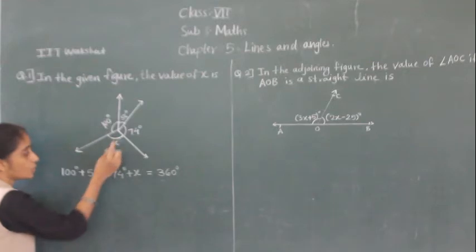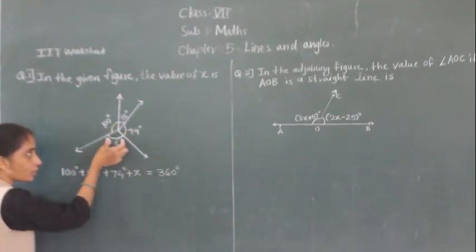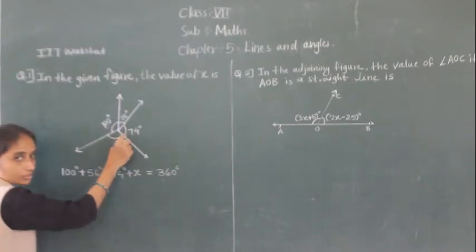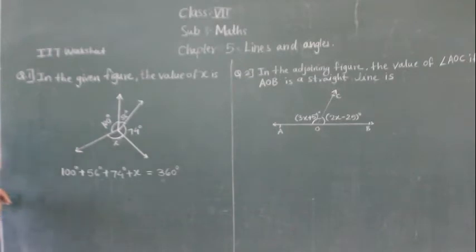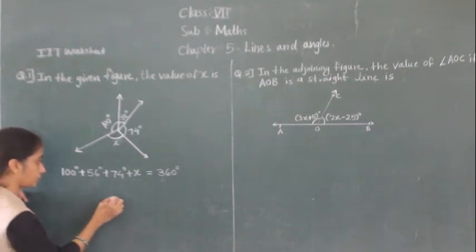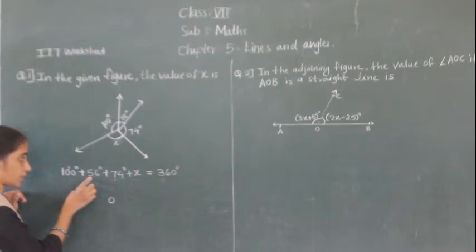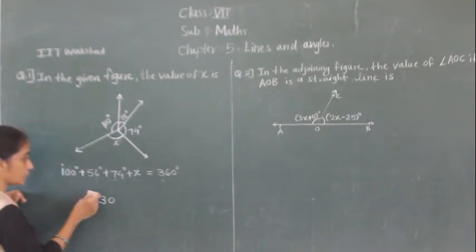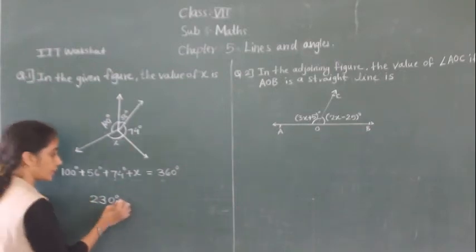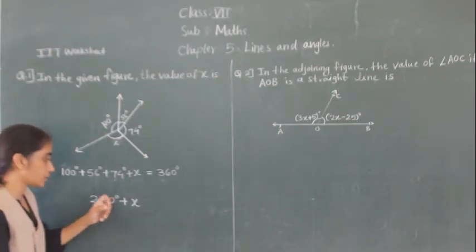We have to find the value of X. We add 100 plus 56 plus 74 plus X — this is the complete angle equal to 360 degrees. Adding: 6 plus 4 is 10, carry 1. 1 plus 7 plus 5 is 13, carry 1. 1 plus 1 is 2. The sum of these angles is 230. So 230 plus X is equal to 360 degrees.